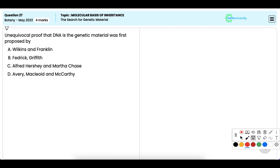This question asks about the scientist who first provided unequivocal proof that DNA is the genetic material. Option A: Wilkins and Franklin.